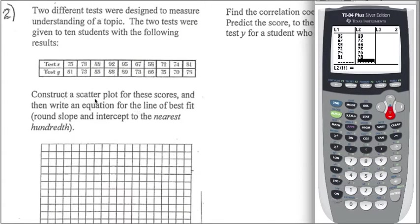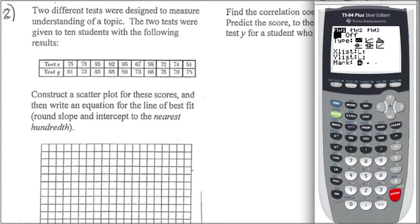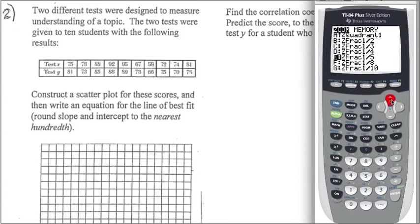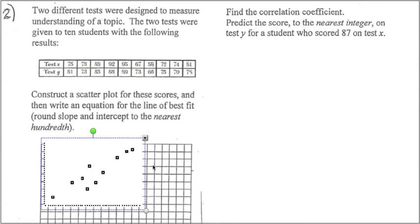Since we are going to go for the scatter plot, what we like to do is press this one, and then we like to put it on. X will be the L1 and Y will be L2. Now we are going to go for zoom stat, which will be zoom. I believe it is number 9. I am just going to type in number 9. And that's the value that we end up getting.